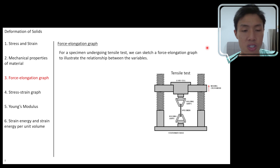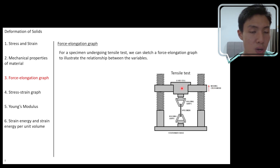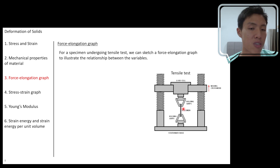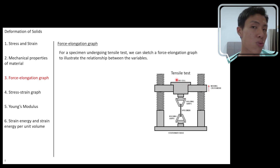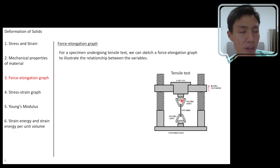This is how a tensile test looks like. You have a specimen, and you clip or hold both ends of it. You adjust the crosshead to move upwards slowly, stretching the specimen stronger and stronger. The amount of tensile stress exerted on the specimen increases as you move the crosshead upwards. The load cell does the measurement to see how much stress is being applied, and you can measure the length of the specimen to determine the strain.